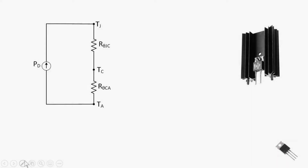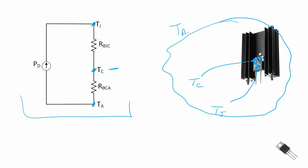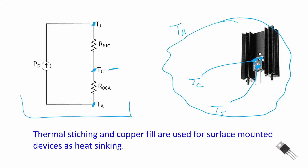Here's an example where we've included the case and the temperature of the case in our model. Again, we have the temperature of the junction, which is internal to the device. We would now have the temperature of the case, which is just immediately external to the device. And finally, we have the temperature of the ambient, which is outside of the device. In this model, we've included a thermal resistance from the case to the ambient, which is often a heat sink.